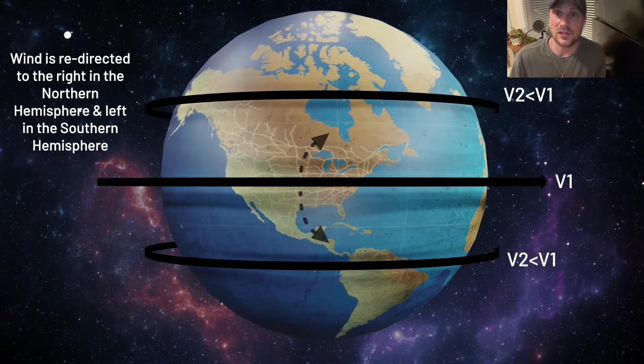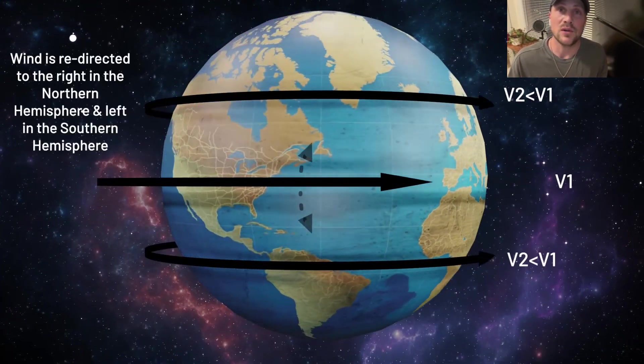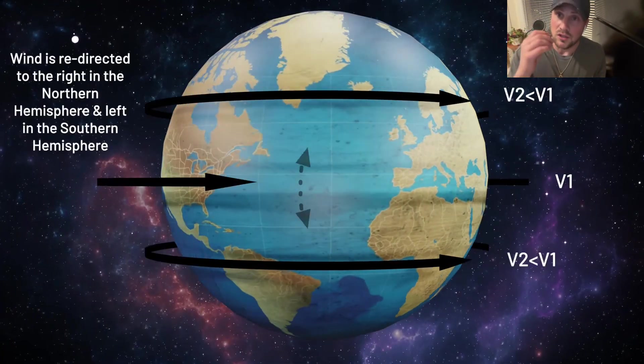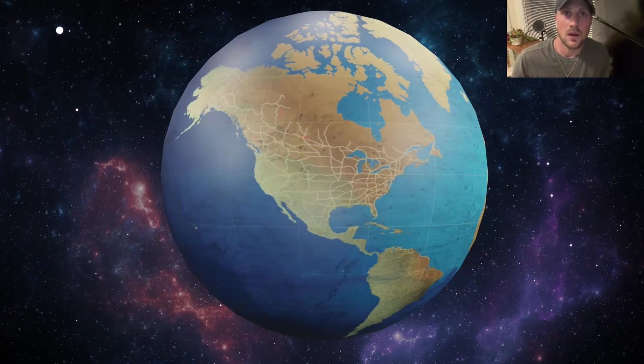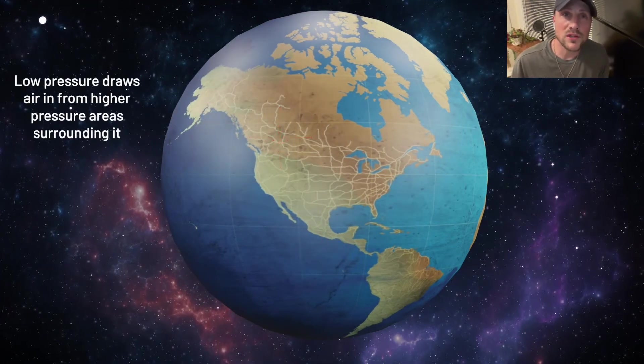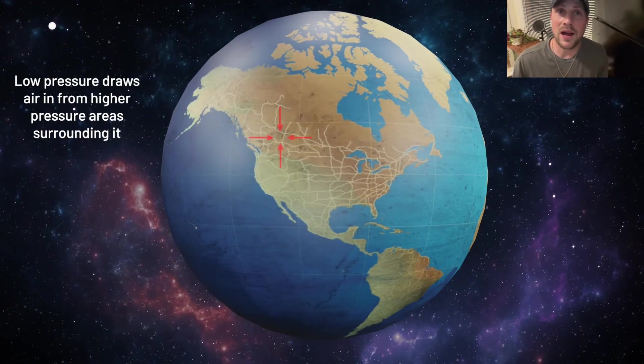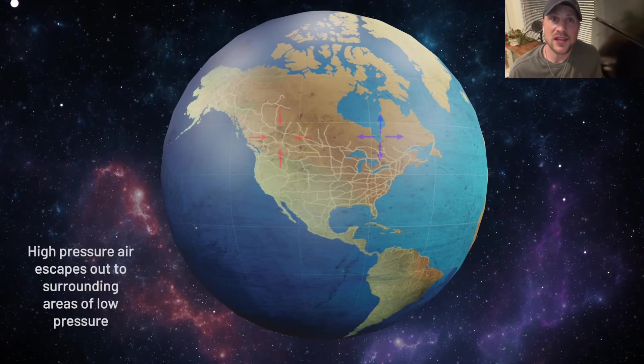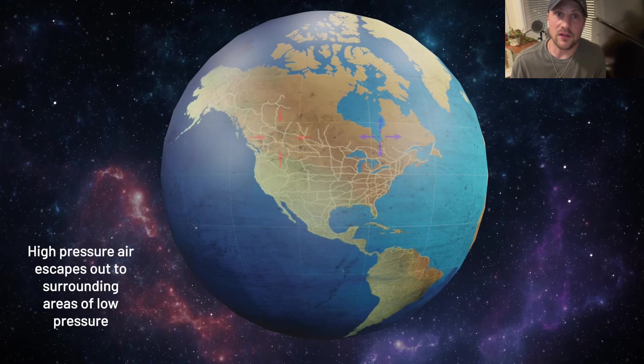So the air actually gets bent as it goes from the equator to the north pole to the right. And then as it goes from the equator to the south pole, it gets bent to the left. And remember, low pressure systems draw air in from higher pressure areas surrounding it. And high pressure air escapes out to surrounding areas of low pressure.